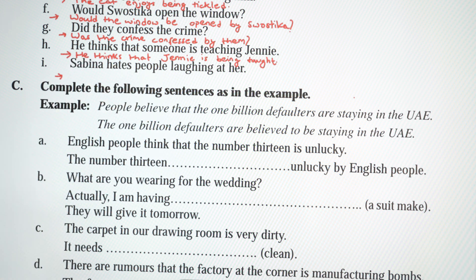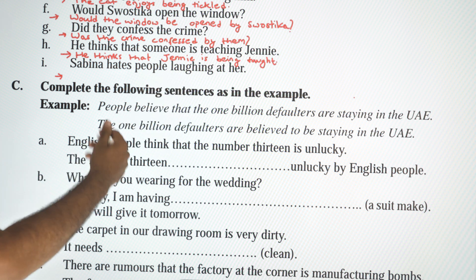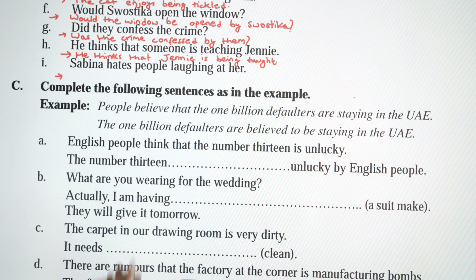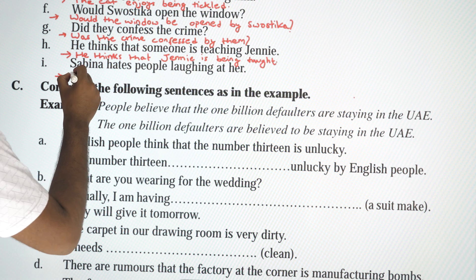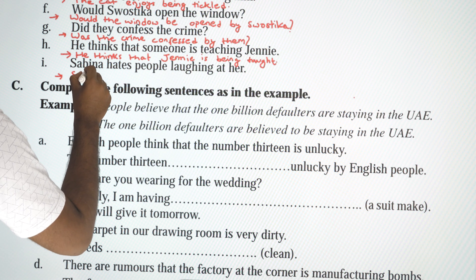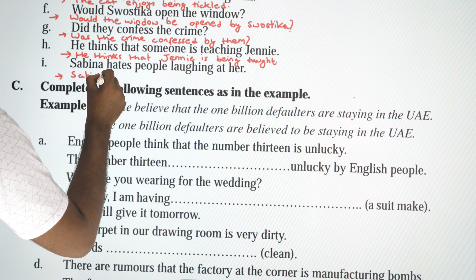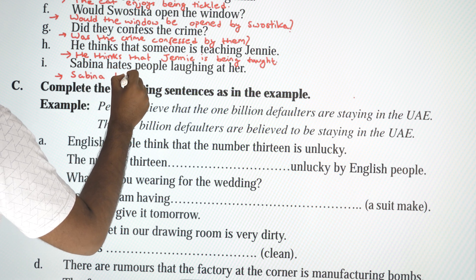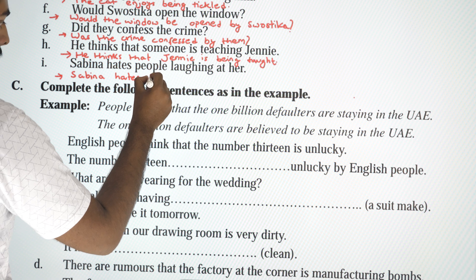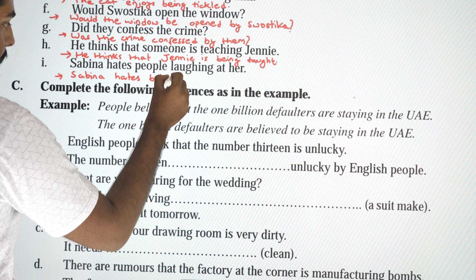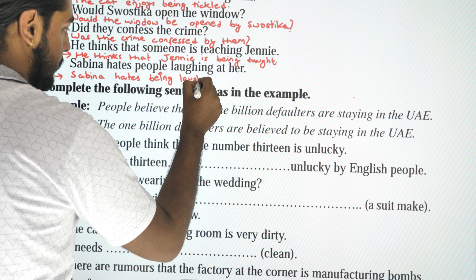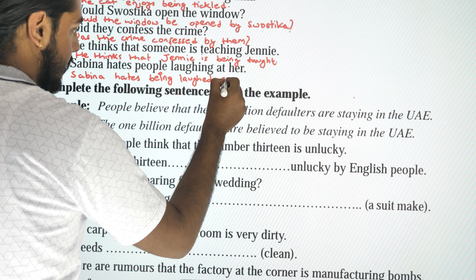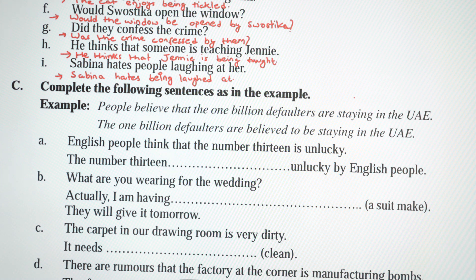Next: 'Sabina hates people laughing at her.' This uses the gerund form — being plus verb 3. Passive: 'Sabina hates being laughed at.' Being laughed at.